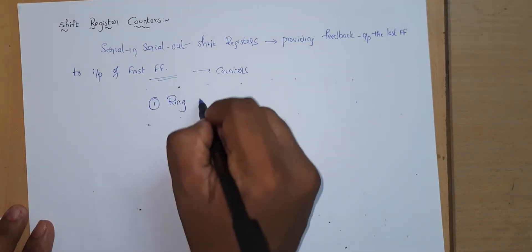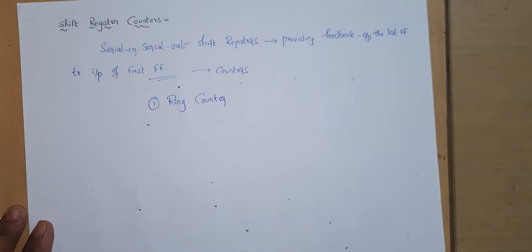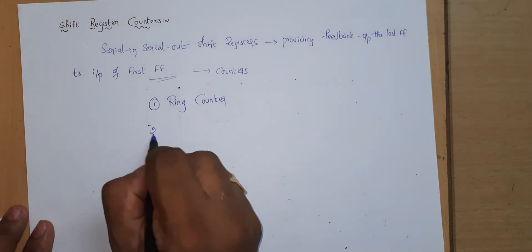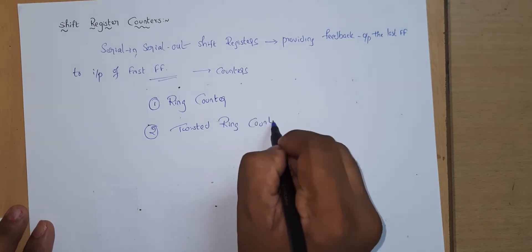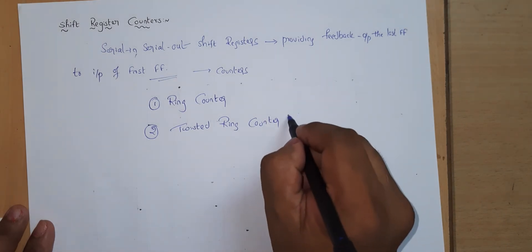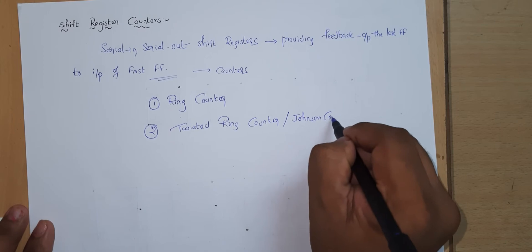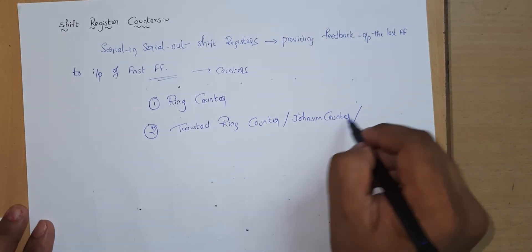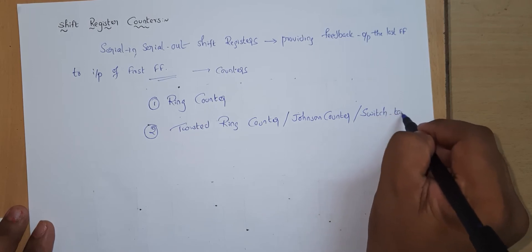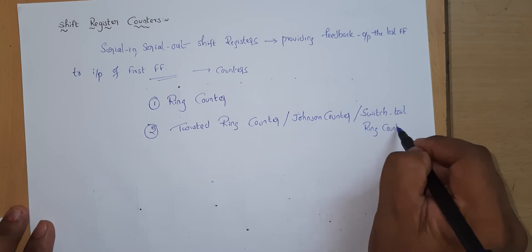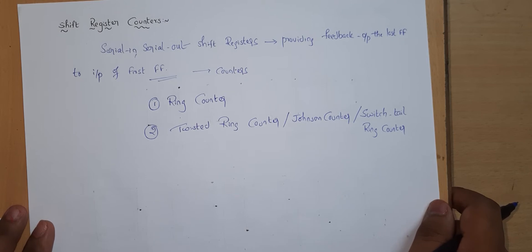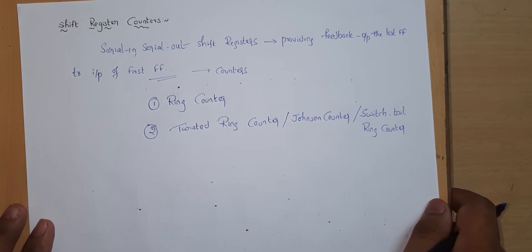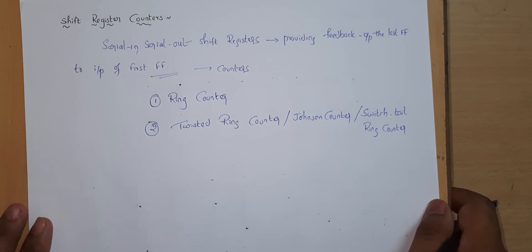In general, shift register counters are available in two types: one is the ring counter and another is the twisted ring counter. The twisted ring counter is also called a Johnson counter or a switch-tail ring counter. These two — the ring counter and the twisted ring counter — are the most widely used shift register counters.